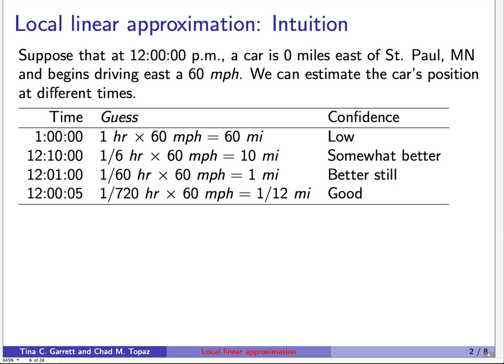Finally, we can ask what if we look just five seconds after noon. Five seconds is 1/720th of an hour, so 1/720th of an hour times 60 miles per hour is a 12th of a mile. Our guess would be that the car is a 12th of a mile east of St. Paul, and we would have pretty good confidence in that — in those five seconds, the car probably just kept doing what it was doing.